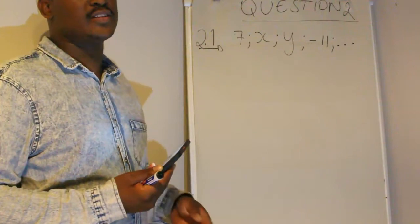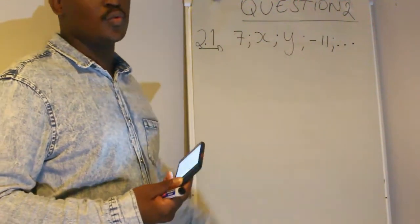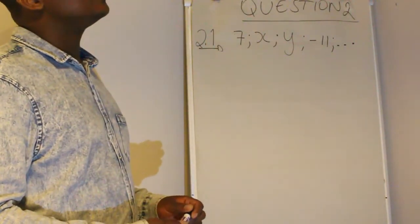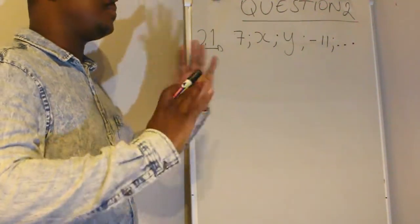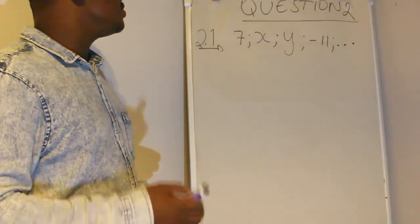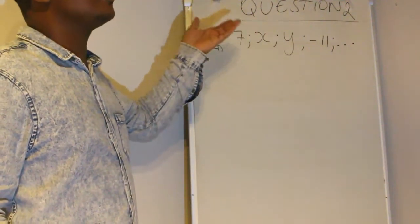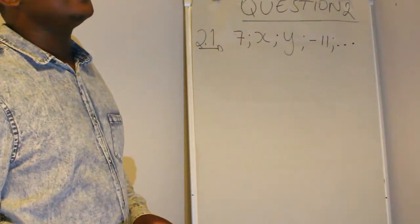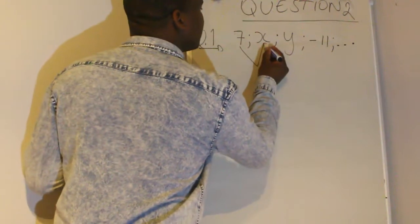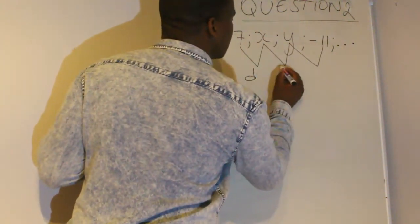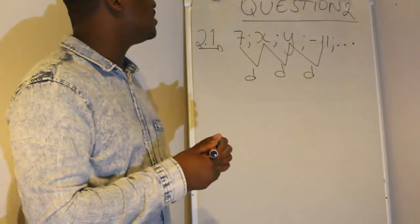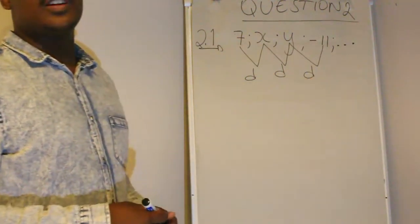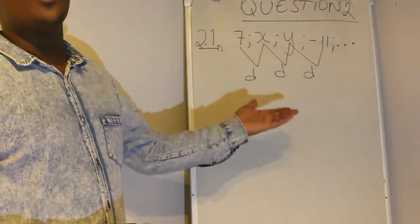You are given that this is an arithmetic sequence and you are asked to determine the values of x and y. There are many ways of answering this question, but one I always find easy to think of is using the general principle of this sequence. Arithmetic sequences have a common difference — if you take the difference of consecutive terms, it's always the same value d.